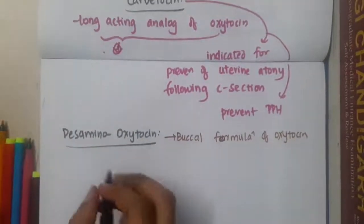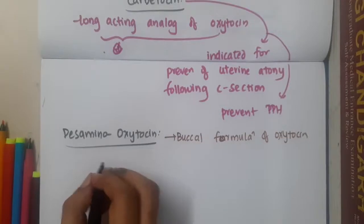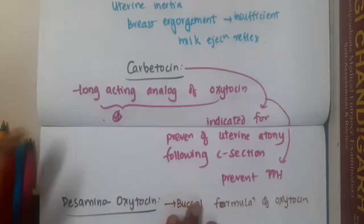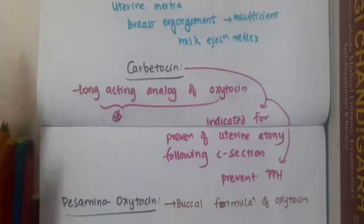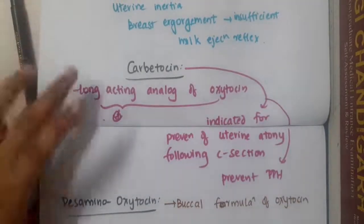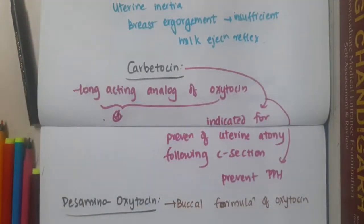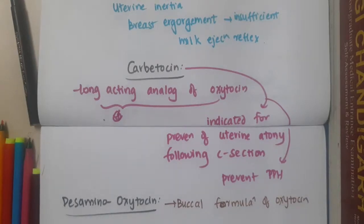So these are the two important drugs: carbytocin and desaminooxytocin. To summarize, the long acting analog of oxytocin is carbytocin.